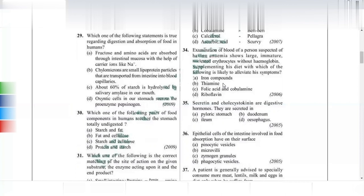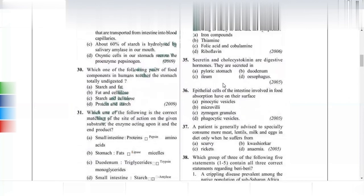Epithelial cells of the intestine involved in food absorption have microvilli on their surface to increase surface area. A patient advised to consume more meat, lentils, milk, and eggs is suffering from kwashiorkor, as these are all protein-rich foods indicating a protein deficiency.